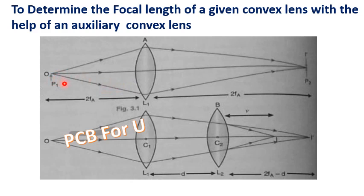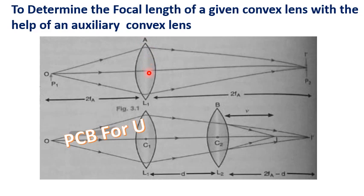The object is at P1 and the image is at P2. The lens is positioned at L1. Another lens is B, and the first lens is at position L1.